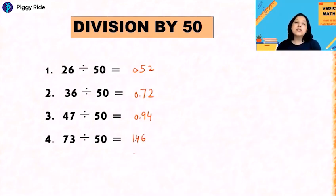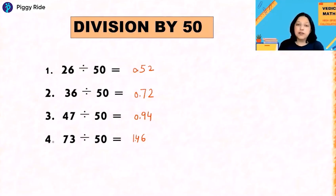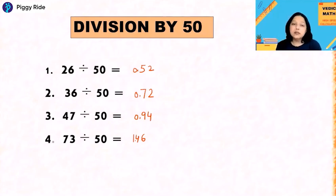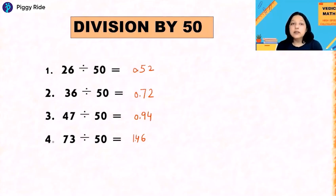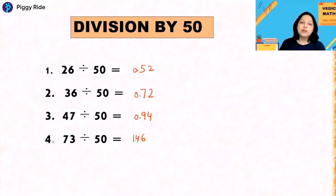Just double the number and divide by 100 — you will quickly get your answer for division by 50. With this, our division and multiplication tricks for today's class are over. In the next part, I will discuss some other interesting Vedic Maths tricks. So keep practicing all the Vedic Maths concepts. Thank you, everyone.